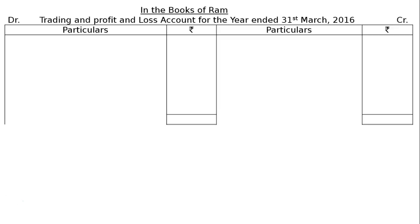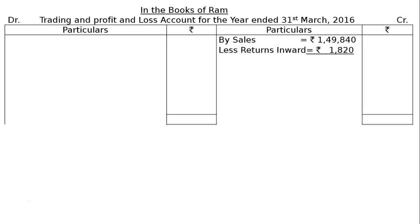In the books of Ram, draw the standard format of the trading and profit and loss account for the year ended 31st March 2016. Starting from the credit side: by sales rupees 1,49,840, less returns inward rupees 1,820, giving a final column figure of rupees 1,48,020. By closing stock rupees 14,920.